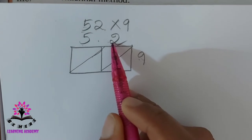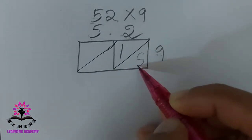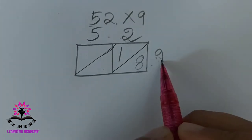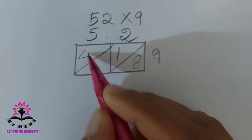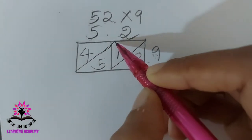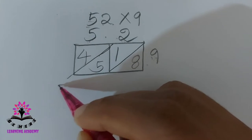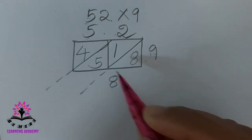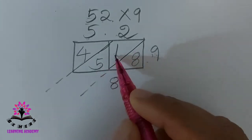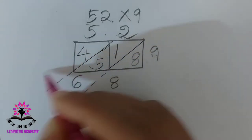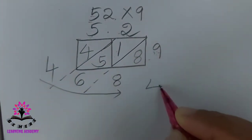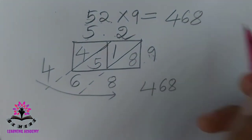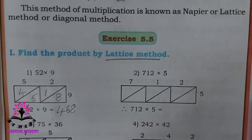First multiply: 9 times 2 is 18, write 1 above and 8 below the slanting line. Then 9 times 5 is 45, write 4 and 5. Now extend the slanting lines. There is only 8 in one diagonal. Then 5 plus 1 is 6, and 4 as it is. So the answer is 468. So 52 into 9 equals 468 using the lattice method.